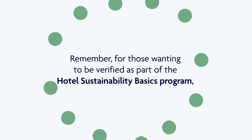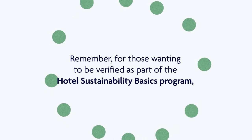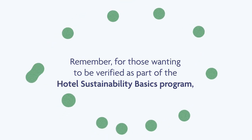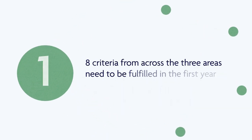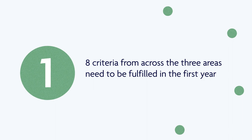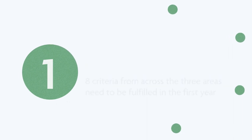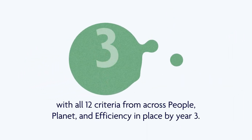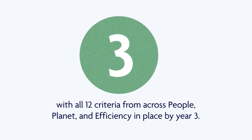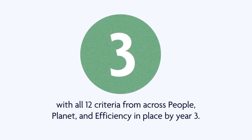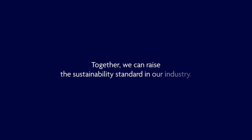Remember, for those wanting to be verified as part of the Hotel Sustainability Basics program, eight criteria from across the three areas need to be fulfilled in the first year, with all 12 criteria from across people, planet, and efficiency in place by year three. Together we can raise the sustainability standard in our industry.